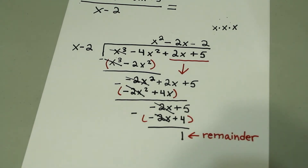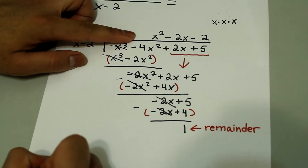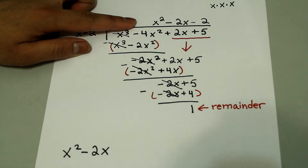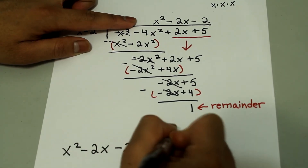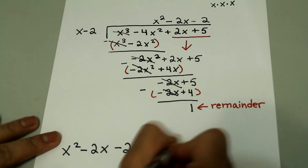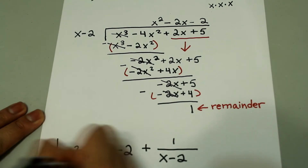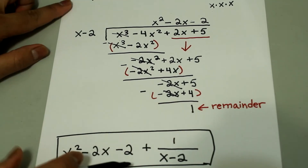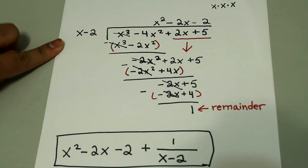So if we were to write the final answer, we would write it as x squared minus 2x minus 2 plus 1 over x minus 2. The x minus 2 just comes from the denominator, or what we divided by.